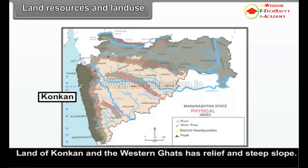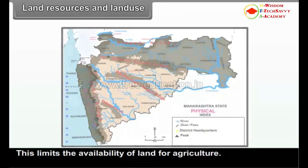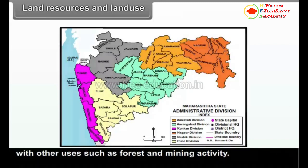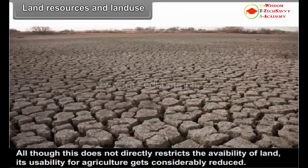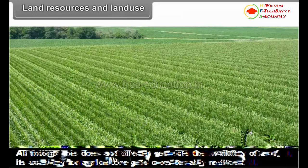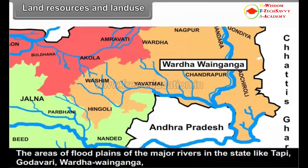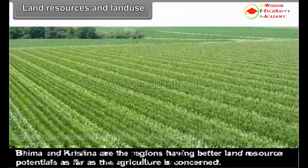Land of Konkan and the Western Ghats has high relief and steep slope, which limits the availability of land for agriculture. In the eastern parts of the state, the availability of land for agriculture is less because of competition with other uses such as forest and mining activity. Central Maharashtra receives low rainfall, which considerably reduces its usability for agriculture. The areas of flood plains of major rivers like Tapi, Godavari, Wardha, Ganga, Bhima and Krishna are regions having better land resource potential for agriculture.